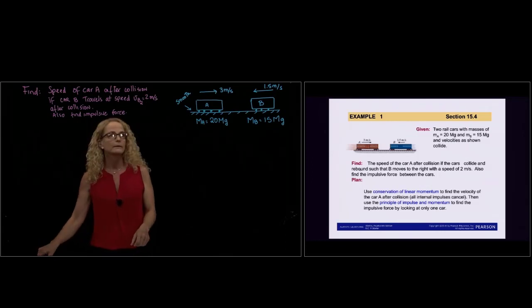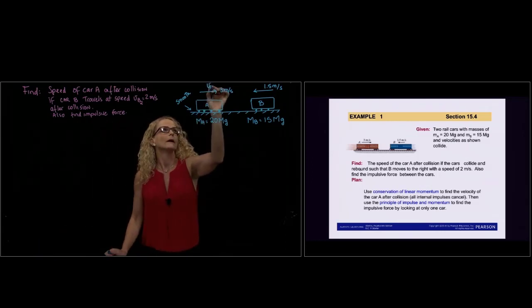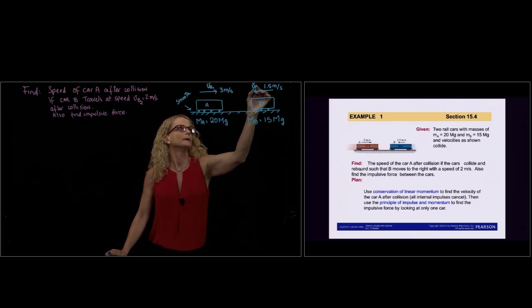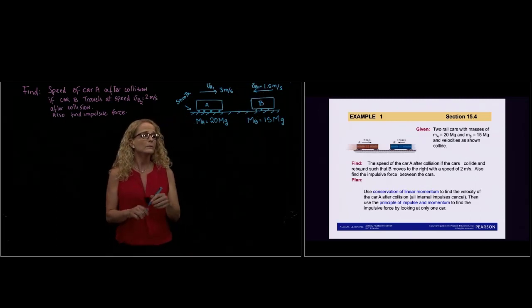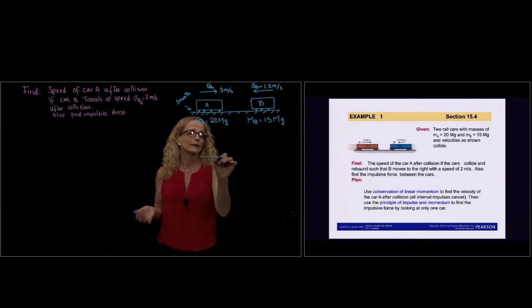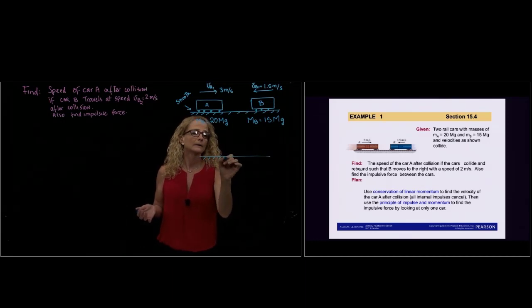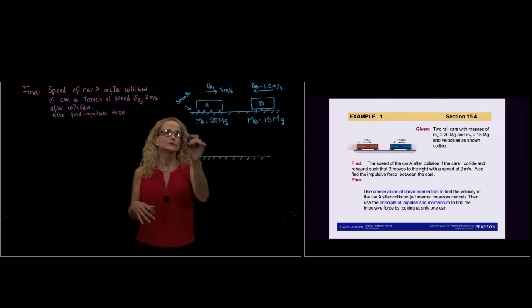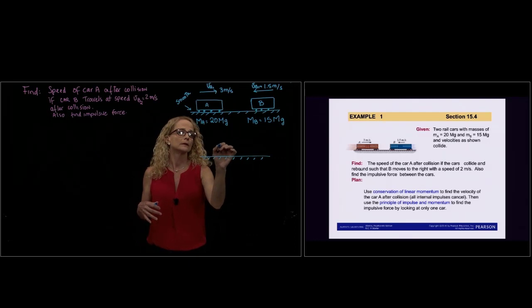We can call the initial velocities A1 and B1. Then there is a second stage after collision. So this is stage number one and this is stage number two.